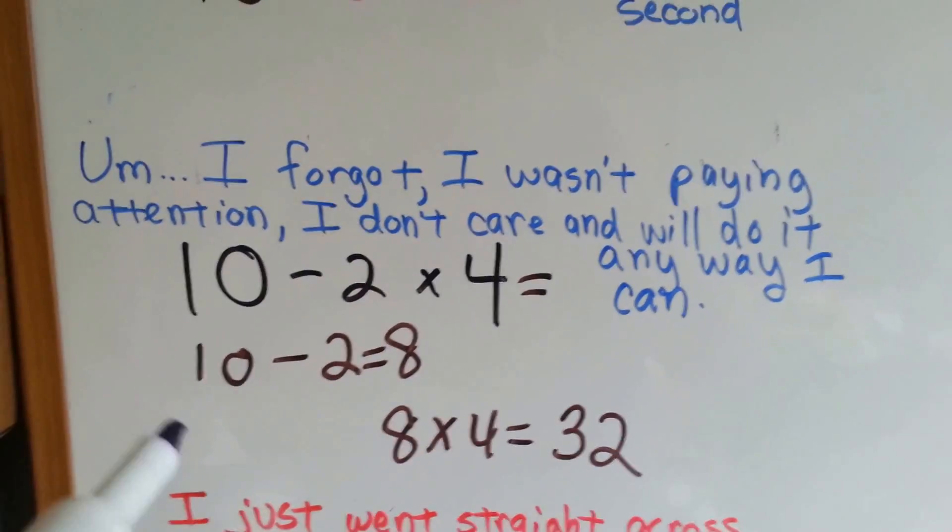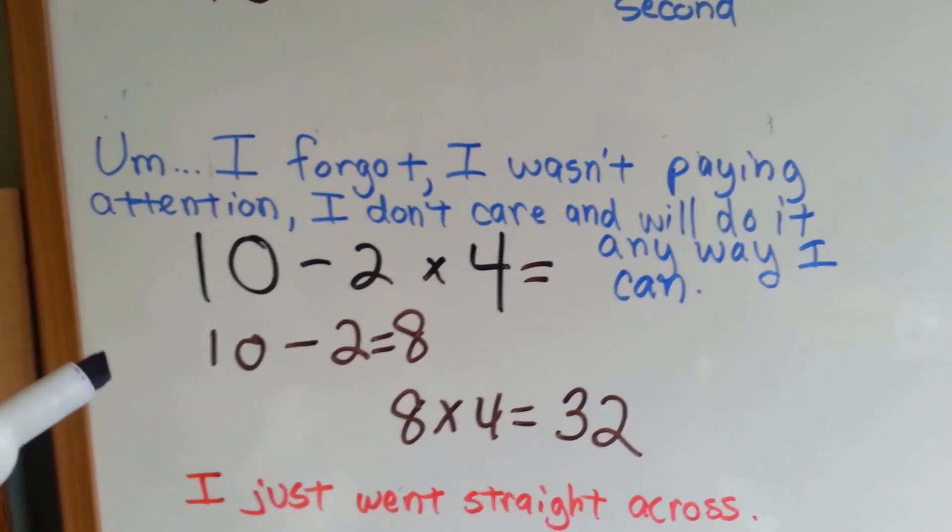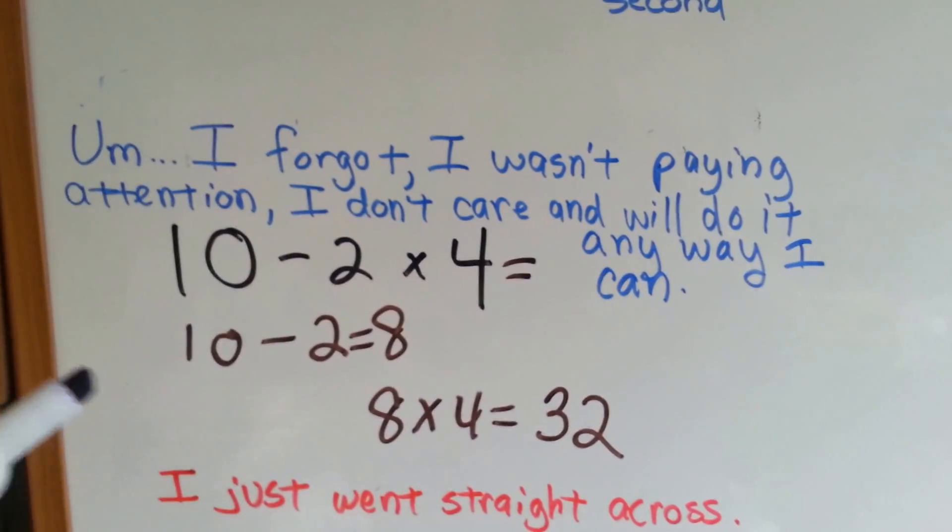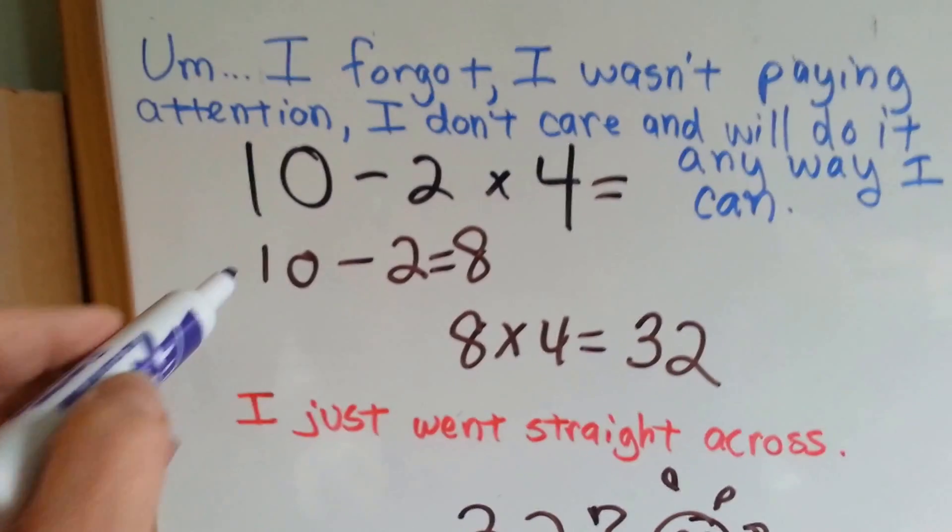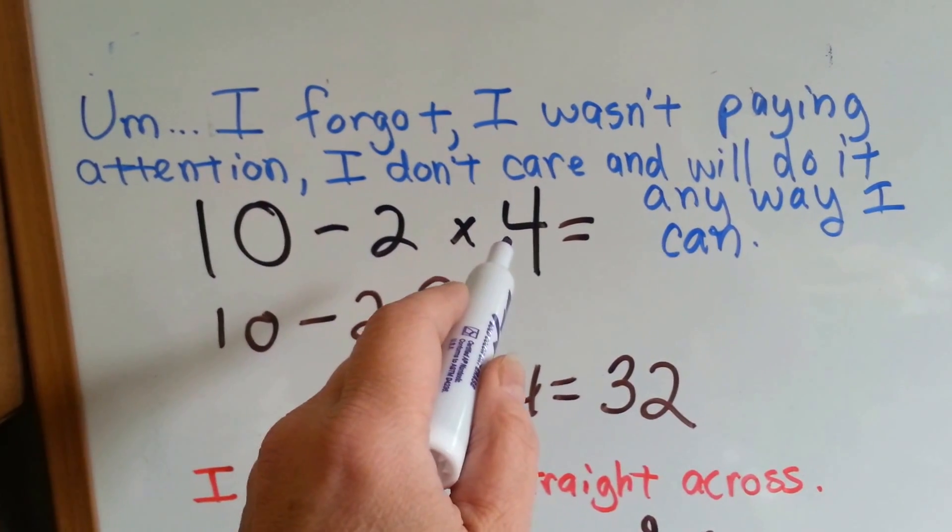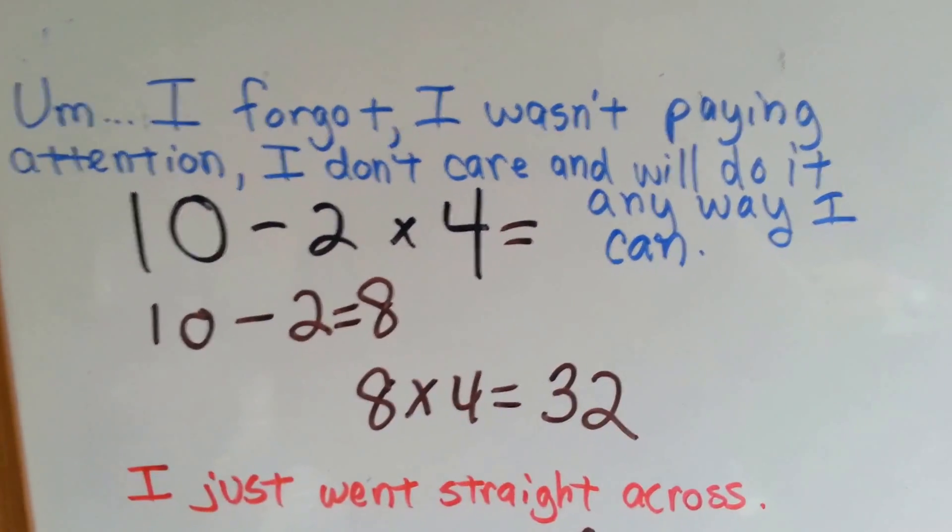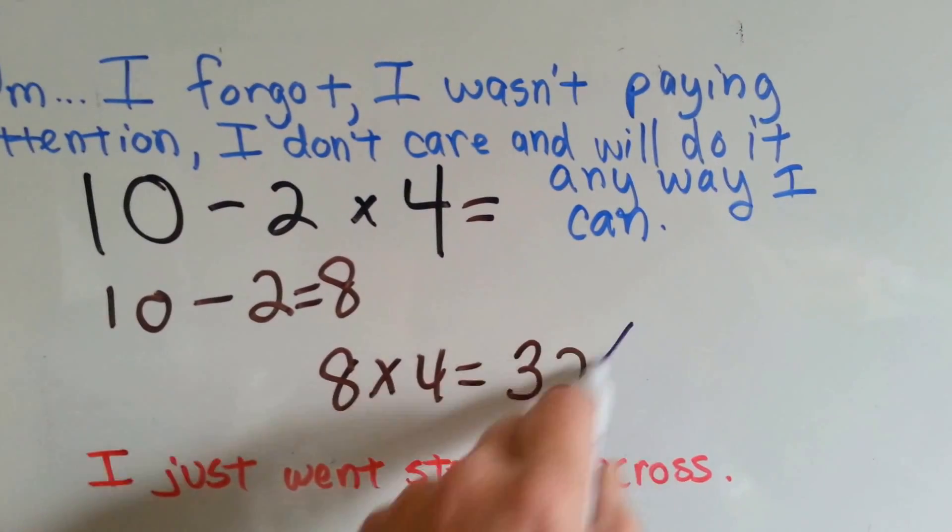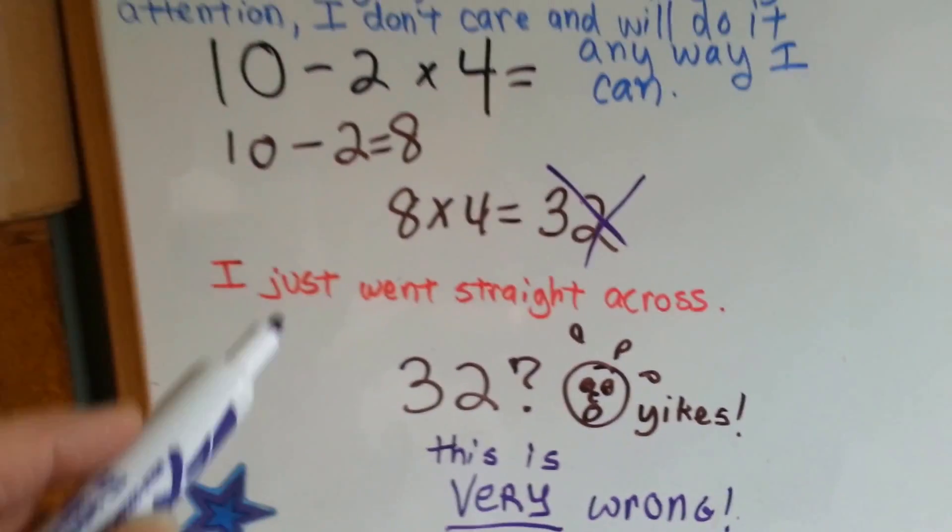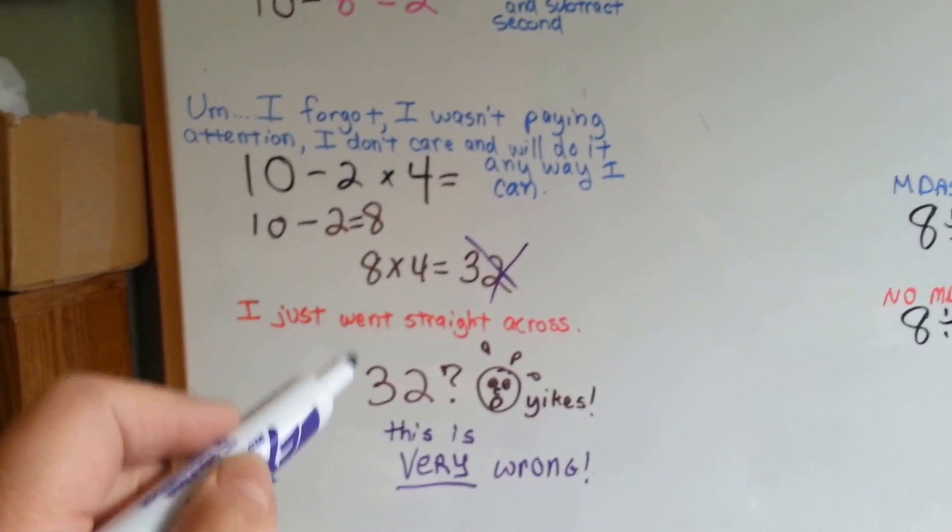Now, look at this. If you just went straight across or, I wasn't paying attention in class, so I don't know what order operations is. I don't care and I'll do it any way I can. I'm smart, I can figure this out. I'm just going to do it the way it is. So, I'm going to do 10 take away 2, which is 8, and then I'm going to multiply it by 4. 8 times 4 is 32. Well, guess what? You would get that marked wrong because it is very wrong.